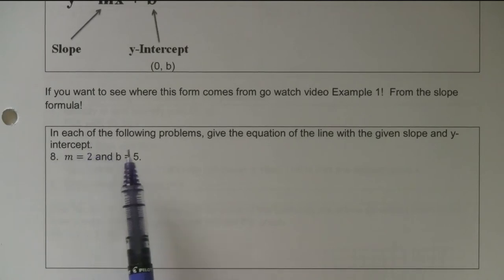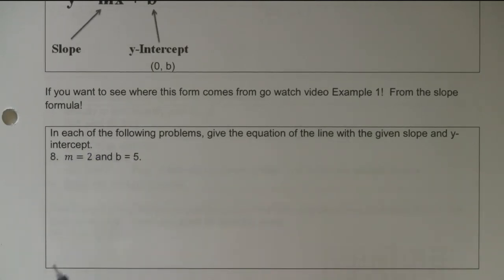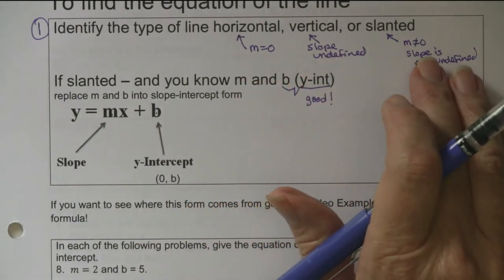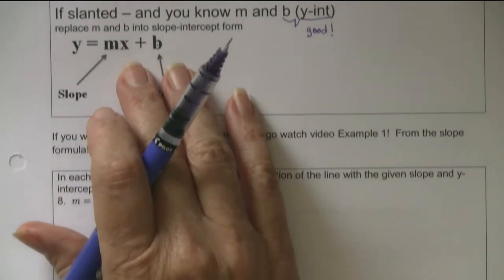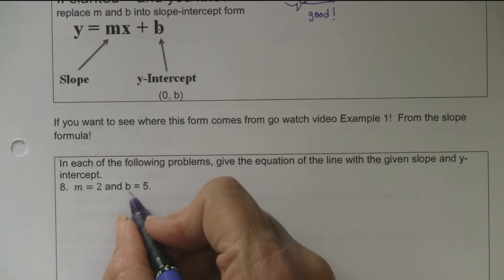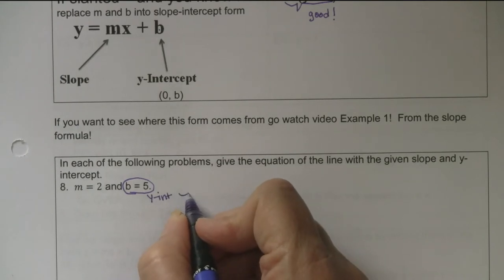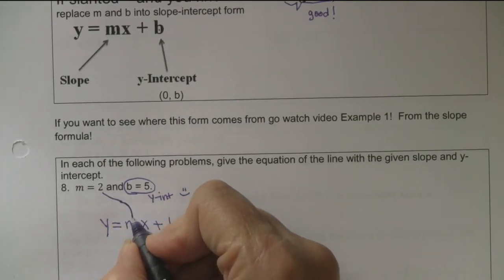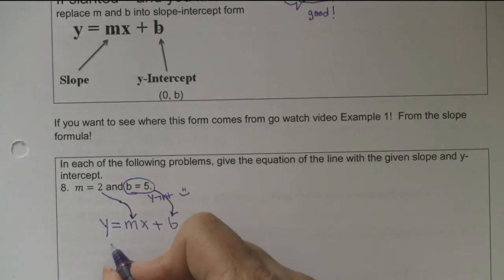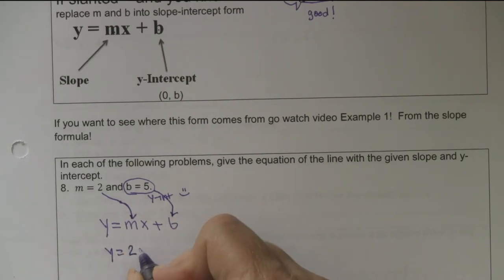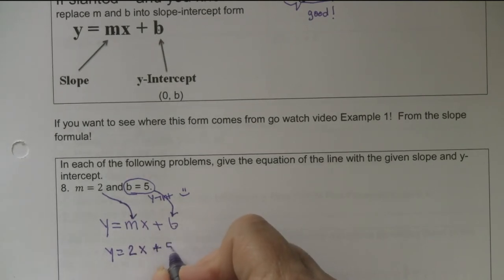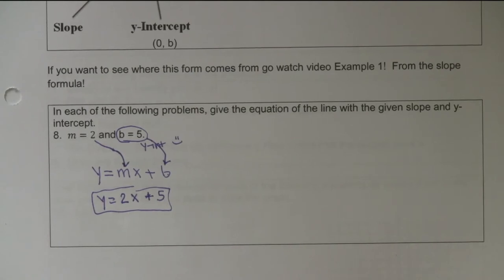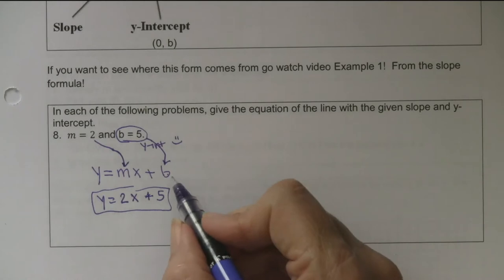They say: for each of the following problems, give the equation of the line with the given slope and y-intercept. Since the slope is 2, that's not zero and not undefined - it's a slanted line, so this is the equation builder for a slanted line. The y-intercept is given for free, so the equation builder is y = mx + b. I just put in what m is and what b is. y equals 2x plus 5 - and that's the equation of the line. It's just that simple. We were given everything we needed - it was a matter of knowing this form.